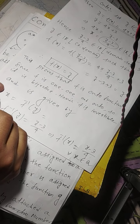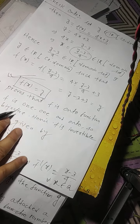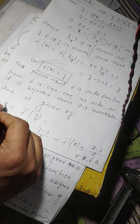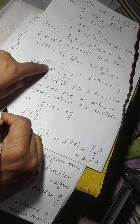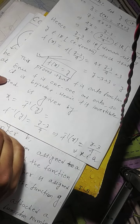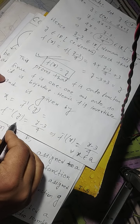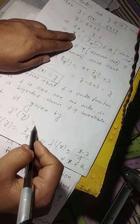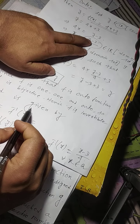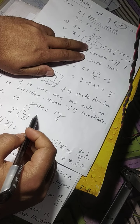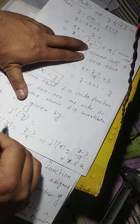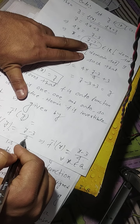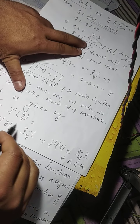Now since f of x equals y, we can write x equals f inverse of y. So f inverse of y equals the value of x, which is (y minus 3) divided by 4. So f inverse of y equals (y minus 3) by 4, replacing x by (y minus 3)/4.